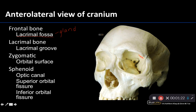This is an important thing to note: the lacrimal gland is actually sitting fairly superior lateral in the orbit. The gland sits here, but tears eventually drain into this region. When lacrimal fluid is secreted as tears, you blink your eyes and it eventually makes its way over here.